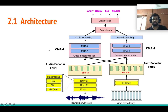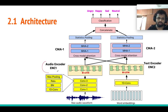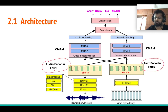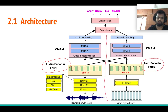This is the entire architecture of the model. As you can see, we have the audio encoder called ENC1 and the text encoder called ENC2. There are two different streams: one stream takes the audio data and another stream takes text data.